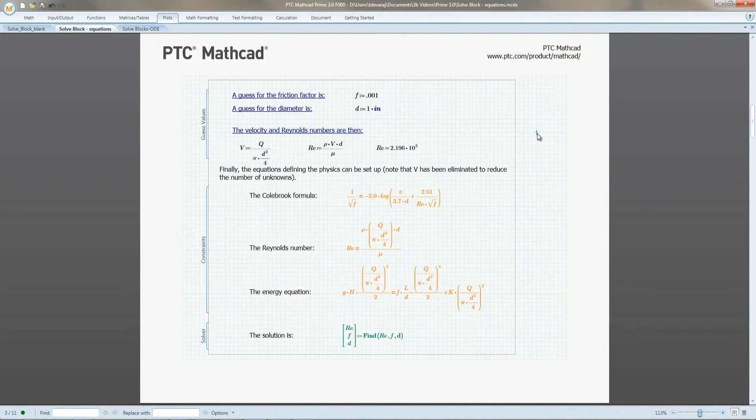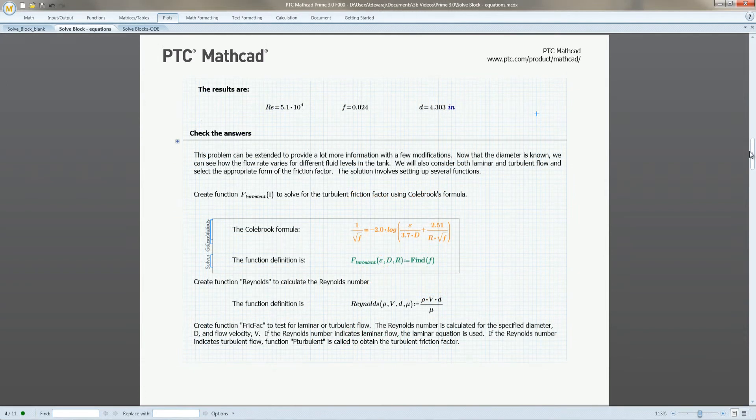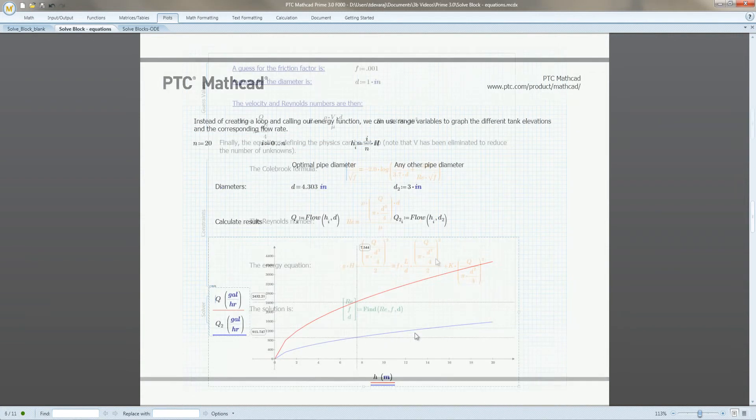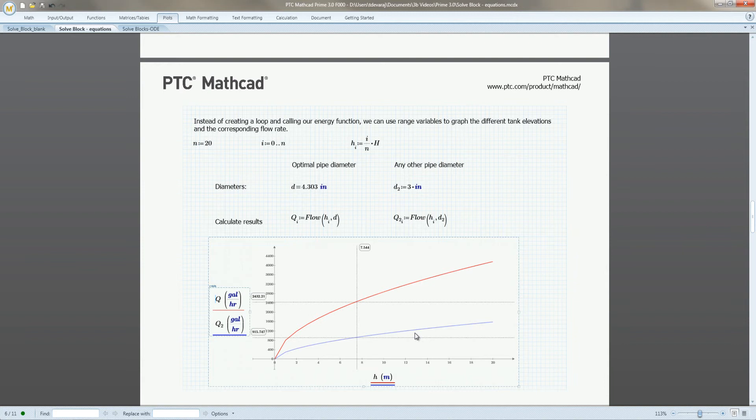We use the solve block to solve for the Reynolds number, friction factor, and pipe diameter. We extend this by parameterizing the solve block, allowing us to calculate the flow rate for any given reservoir depth. We plot this parameterized function to see how the flow rate, depth, and pipe diameters are related.